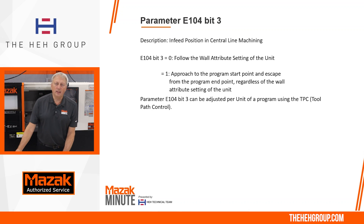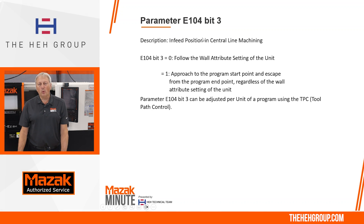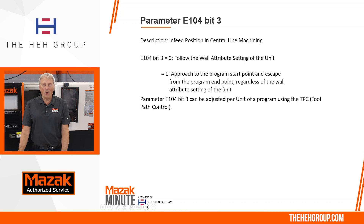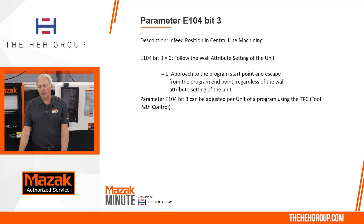There is one important parameter to understand: E104 bit 3. In a closed operation, instead of staying away by the E30 parameter, setting this bit causes the tool to start directly on the line. From the parameter book: if E104 bit 3 is set to 0, it follows the wall attribute setting of the unit. If set to 1, the approach to the program start and escape from the program end will start directly there, regardless of wall attribute. E104 bit 3 can be adjusted per unit using the TPC — refer to a previous Mazak Minute on how TPC works.